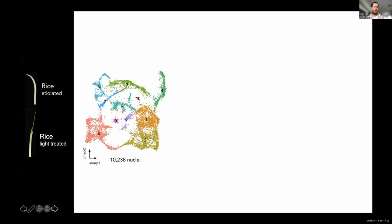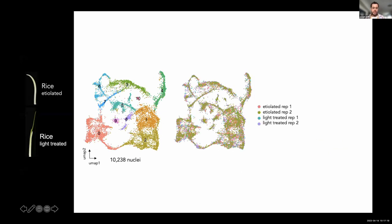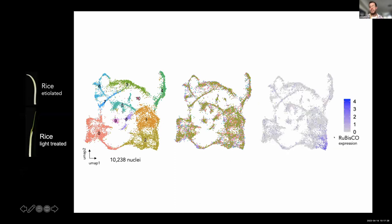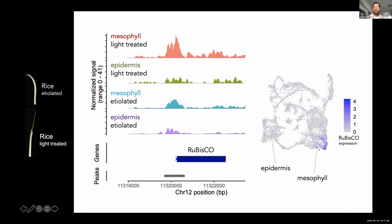The output of this experiment for rice was sequencing 10,000 nuclei, with different clusters representing different cell types. Etiolated and light-treated nuclei overlap pretty well in UMAP space. We can see expression of favorite genes such as Rubisco, and look at how those genes perform not only in gene expression but also in accessible chromatin in the ATAC space. Rubisco is more highly accessible under light-treated conditions compared to etiolated conditions.